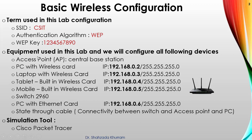The equipment used in this lab includes an access point as a base station, a PC with a wireless card, a laptop with a wireless card, a tablet with built-in wireless, a mobile with built-in wireless, a switch 2960, a PC with an Ethernet card, and straight-through cables. We are also assigning different IP addresses to each device.